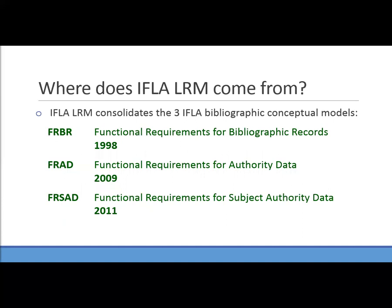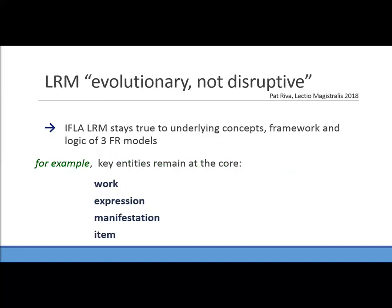IFLA LRM is the consolidation of the three previous IFLA bibliographic conceptual models: FRBR, FRAD, and FRSAD, covering bibliographic, authority, and subject authority data. But IFLA LRM is not a break with the past. In the words of Pat Riva, LRM is evolutionary, not disruptive. That means LRM stays true to all the underlying concepts, framework, and logic of the three previous FR models. At the core of LRM are the entities work, expression, manifestation, and item, just as they are in the other models.